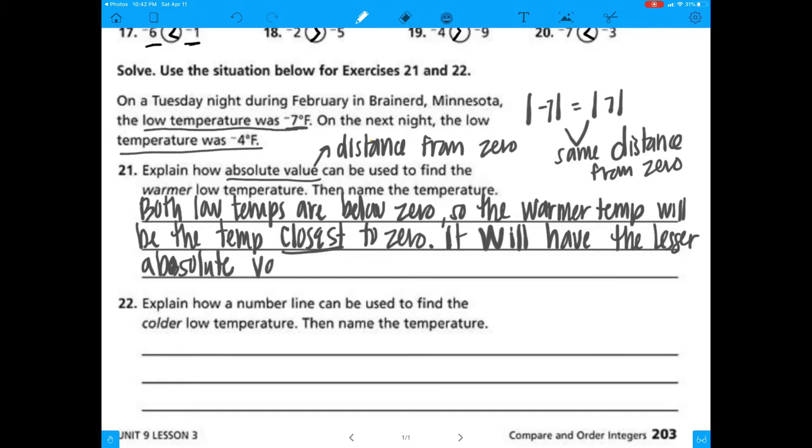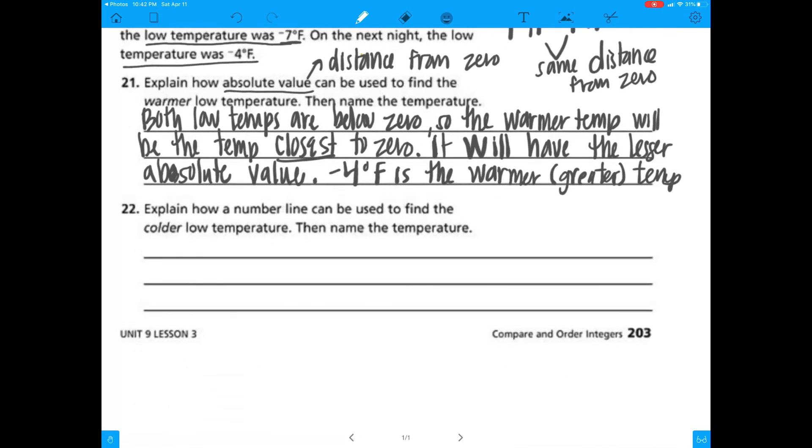So for using it when you're looking at comparing numbers, just like we're doing in number 21, we're looking at how we're looking at that number to tell us which one is closer to 0. So in this case, it was the number with the smallest absolute value because both are below 0.